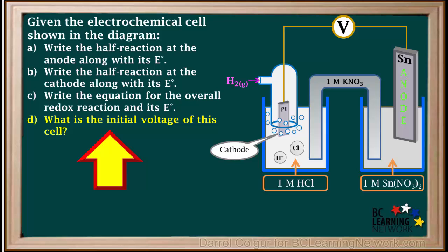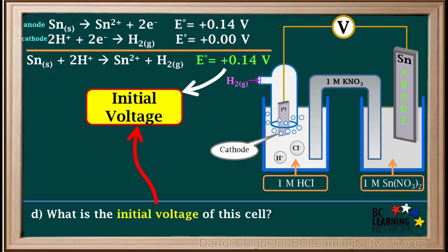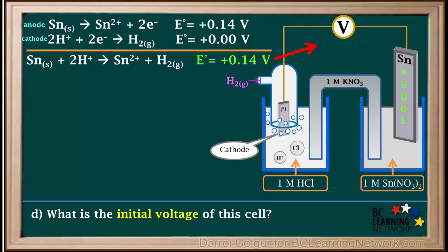The D part of the question asks us to state the initial voltage of this cell. Remember the standard cell potential is the same as the initial voltage of a cell. So the initial voltage of this cell is positive 0.14 volts. We'll make a note of this up here by the voltmeter.